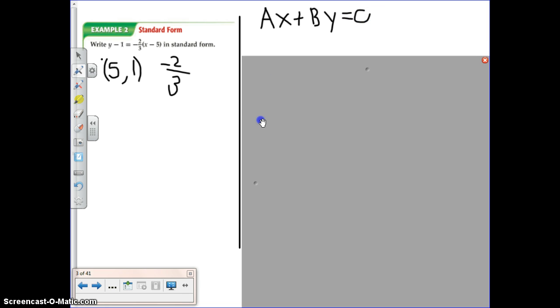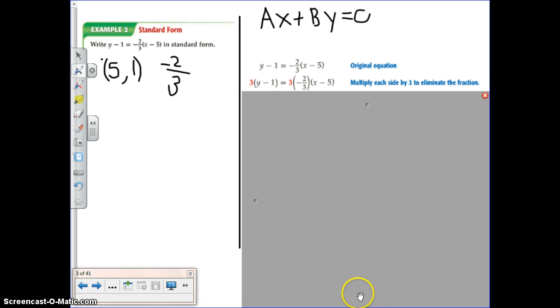So starting off with this equation, I can see that I have a negative 2 over 3. Well, we already talked about that we don't want to have any fractions as coefficients when we're using our standard form. So the first thing I'm going to do is multiply both sides by 3, and I can do this because if I do it to one side,